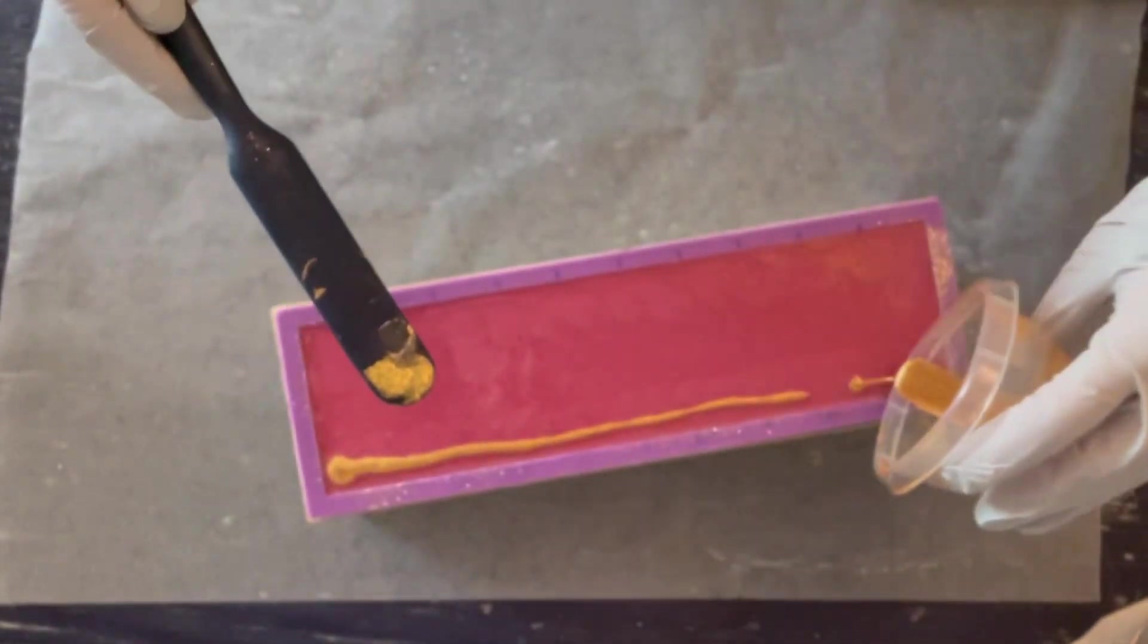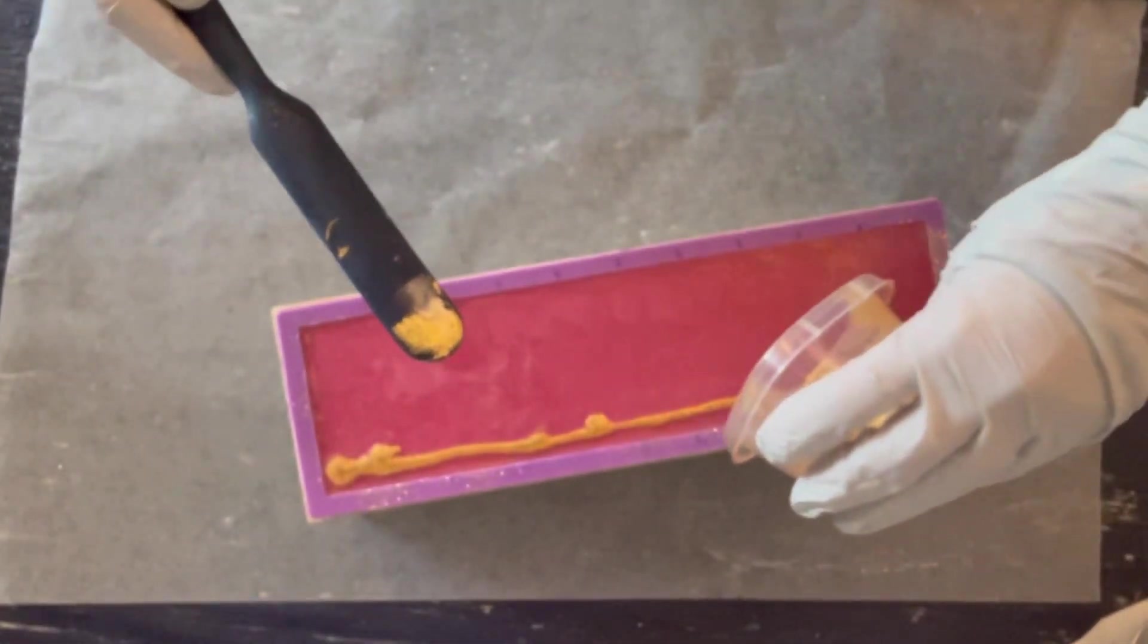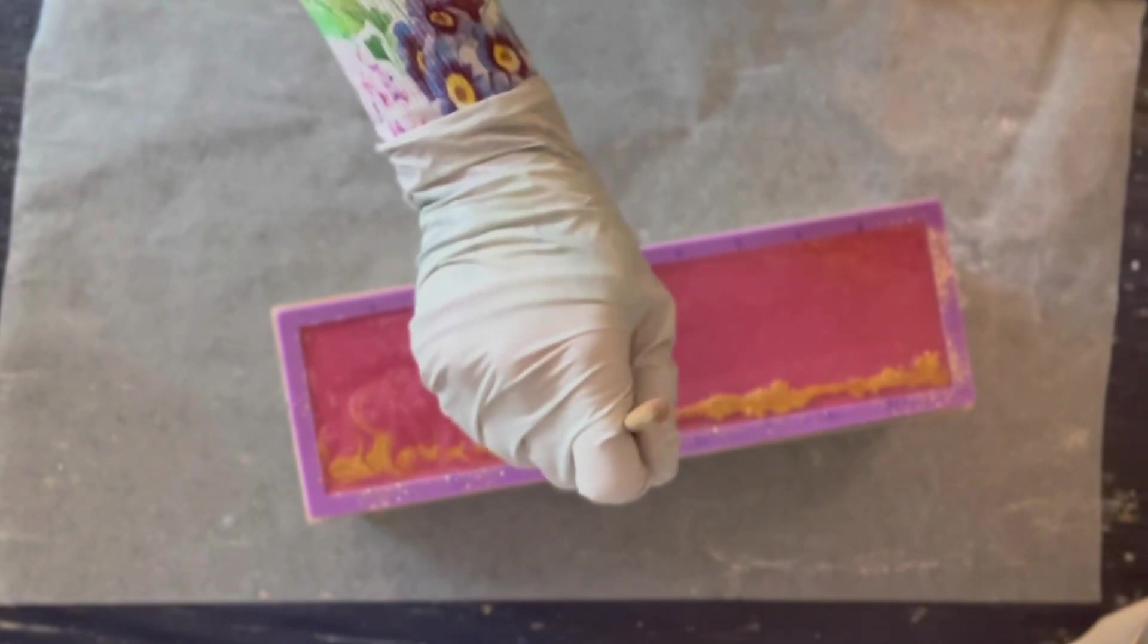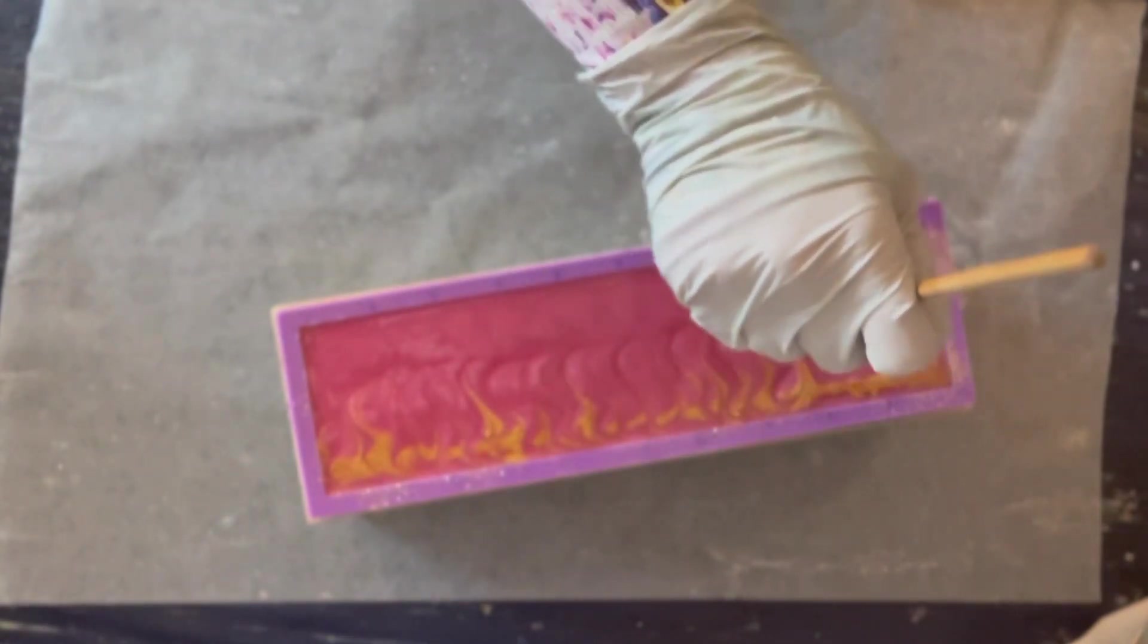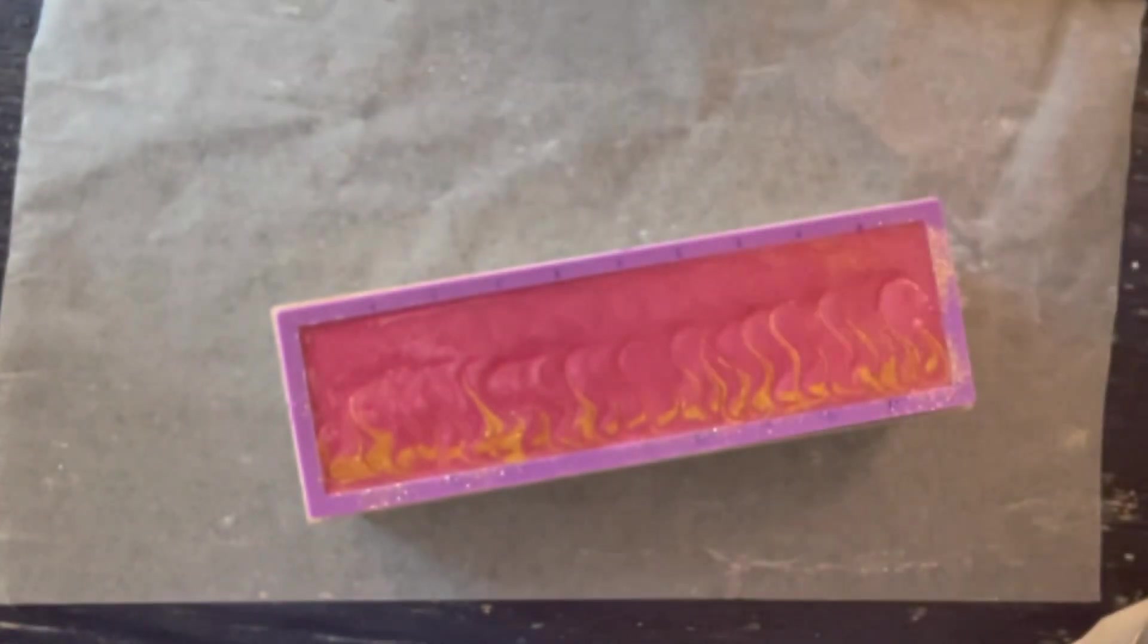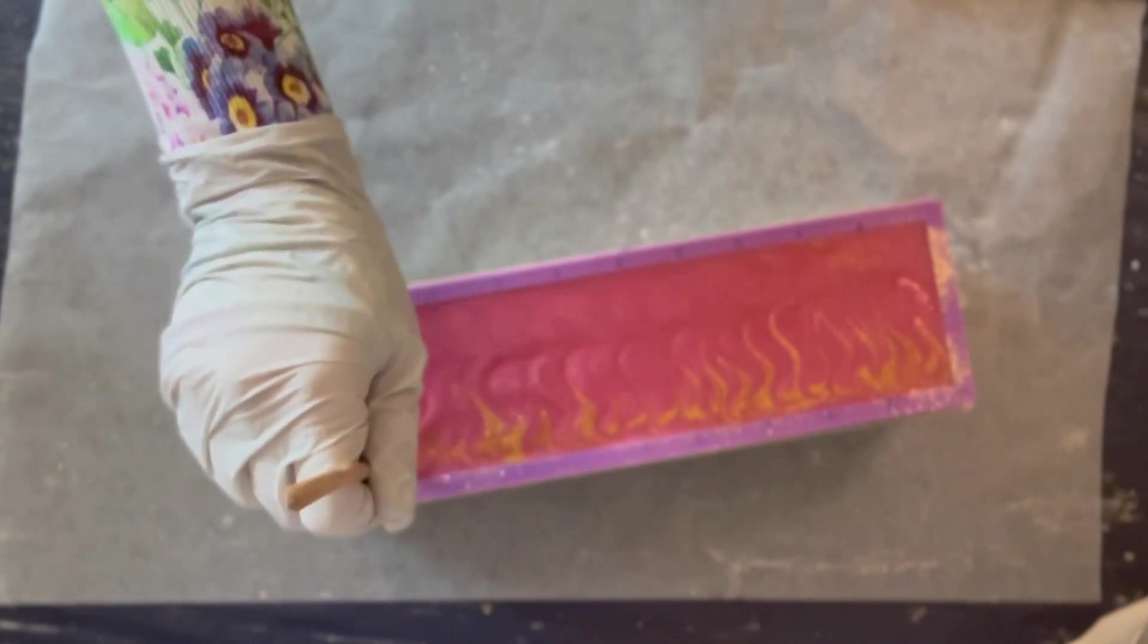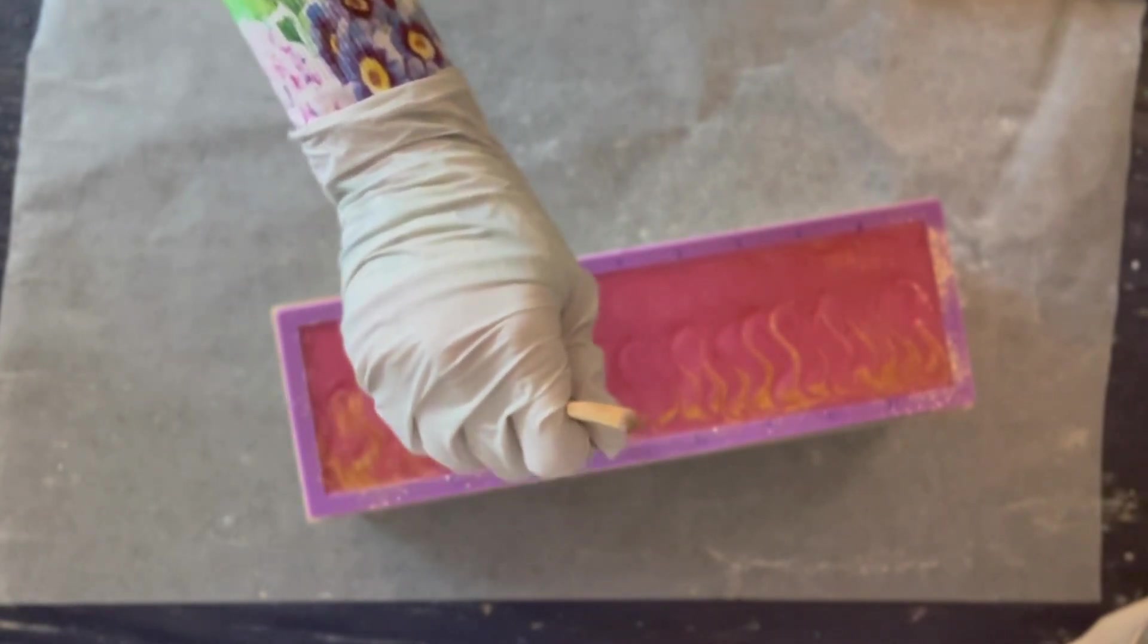But this one went from like 85 degrees to 150 degrees from the time that I poured it to 10 minutes after I poured it. So all of these swirls and stuff would not have been possible even a few minutes later because it would have just been too hot and difficult to work with. It starts solidifying.